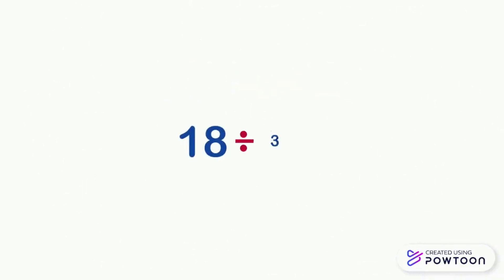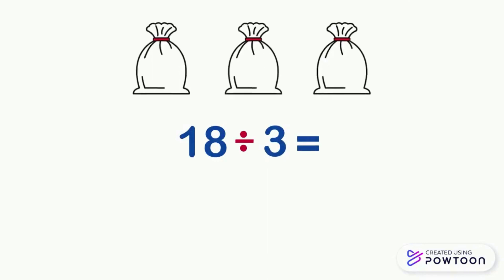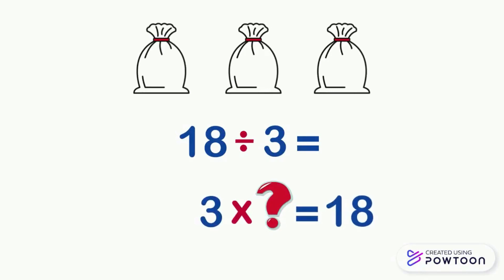Now try to do this division problem, which is 18 divided by 3. Imagine that we have distributed 18 equally into 3 groups. Then pop the question in your head: 3 times what gives us 18? It's of course 3 times 6 equals 18, and then 18 divided by 3 equals 6.